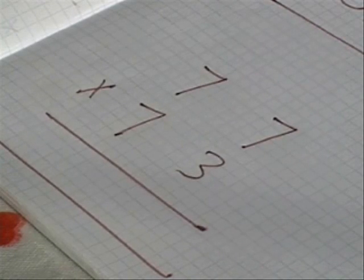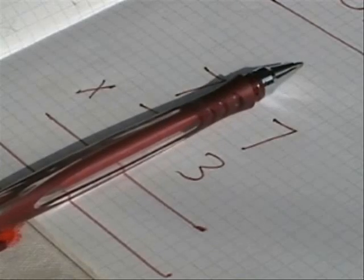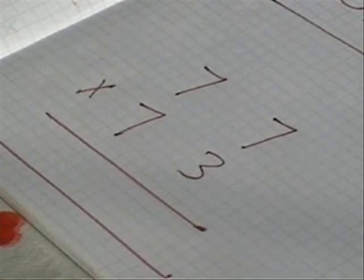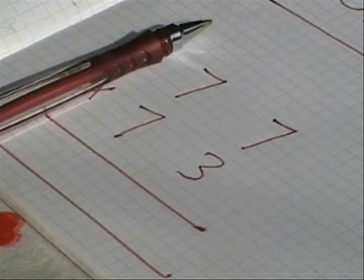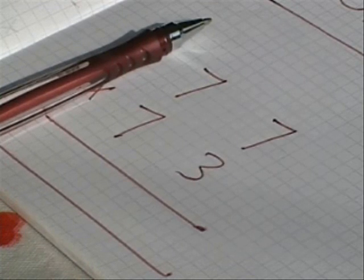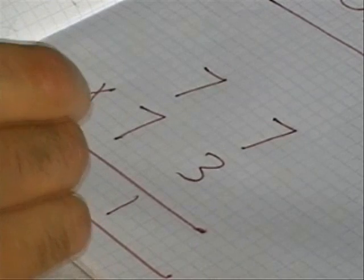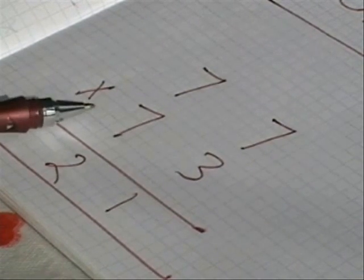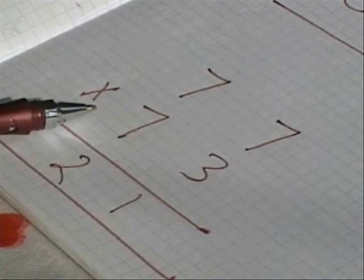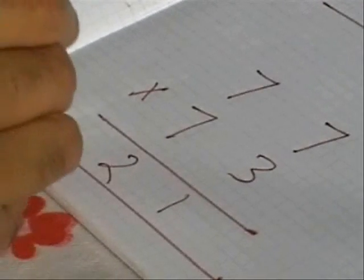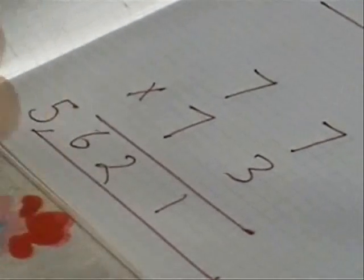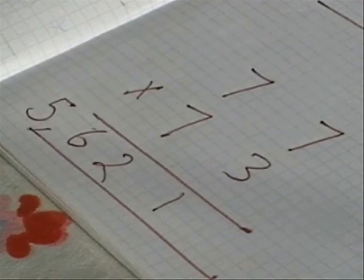This is the last example I'm going to show you. That's 77 times 73. Our first test, if I add the 7 and 3, I do get 10. The second is, in the tens column, both numbers are the same. So, 7 times 3 is 21. 1, 20. The next number after 7 is 8. 7 times 8 is 56. So my answer is 5621.